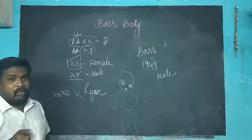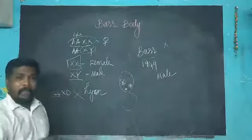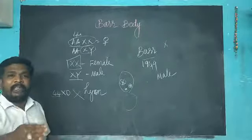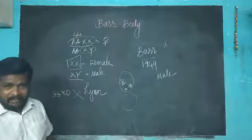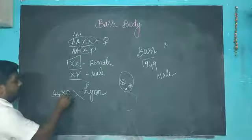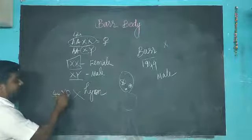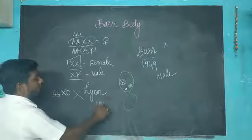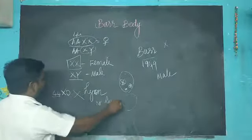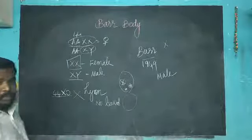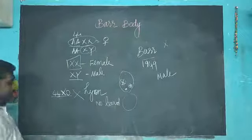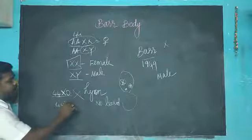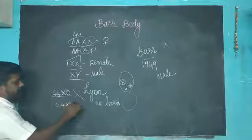Next one: 44+XXY. Actually it's a male, but one X chromosome is added. So here, this is male with one Barr body present. This one additional X chromosome will condense. This is dosage compensation.